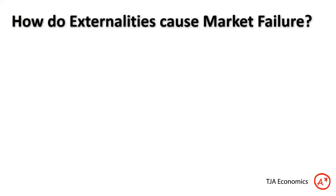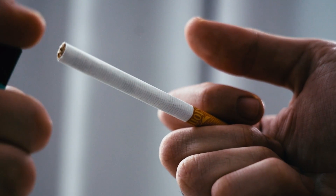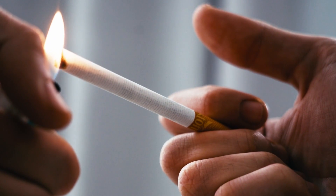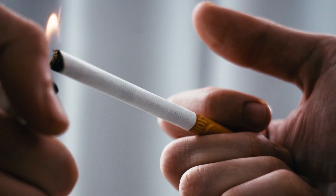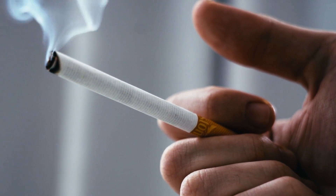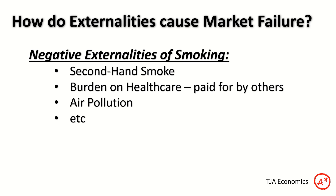So the question is: how do externalities cause that inefficient allocation of resources? Take, for example, an activity like smoking. Whenever you smoke, there are external costs — spillover costs onto third parties every time someone smokes a cigarette. For example, secondhand smoke on people around you may cause them health issues, increased lung cancer, and so on.